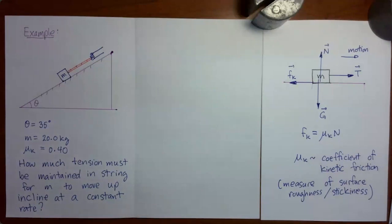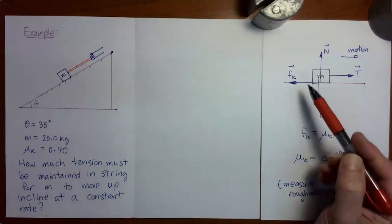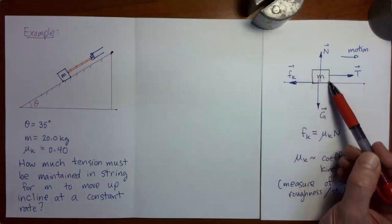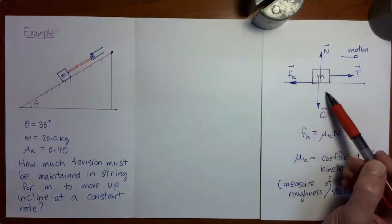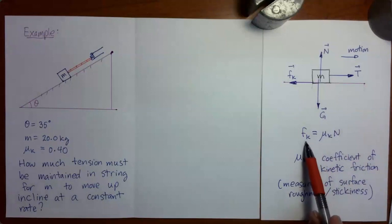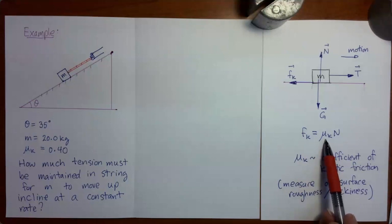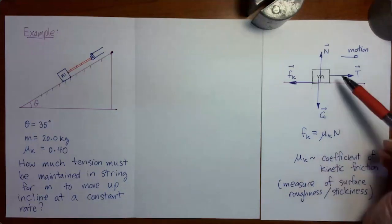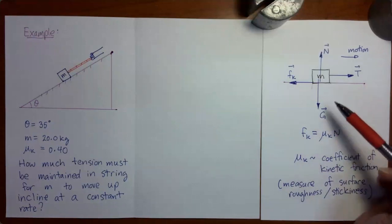In the previous few videos, I introduced you to frictional forces. We learned that a kinetic friction force acts when there is a sliding motion between two objects with surfaces in contact. The strength of the kinetic friction force equals the coefficient of kinetic friction multiplied by the strength of the normal force acting between the two surfaces.